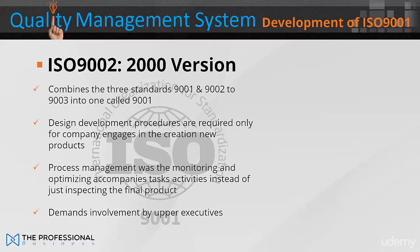The ISO 9001 2000 version combines all three standards — the 9001, 9002 and 9003 — into one called the 9001. Design development procedures are required only for companies engaged in the creation of new products. The 2000 version sought to make radical changes in thinking by placing the concept of process management in the forefront. Process management was the monitoring and optimisation of a company's tasks and activities, instead of just inspecting the final product. The 2000 version also demanded involvement by upper executives in order to integrate quality into the business system and avoid delegation of quality functions to junior administrators. Another goal was to improve effectiveness via process performance metrics — numerical measurement of the effectiveness of tasks in an activity. Expectations of continual process improvement and tracking customer satisfaction were made explicit.